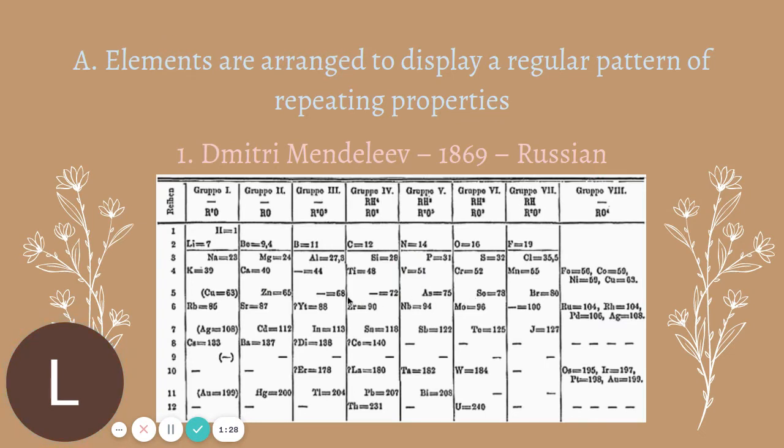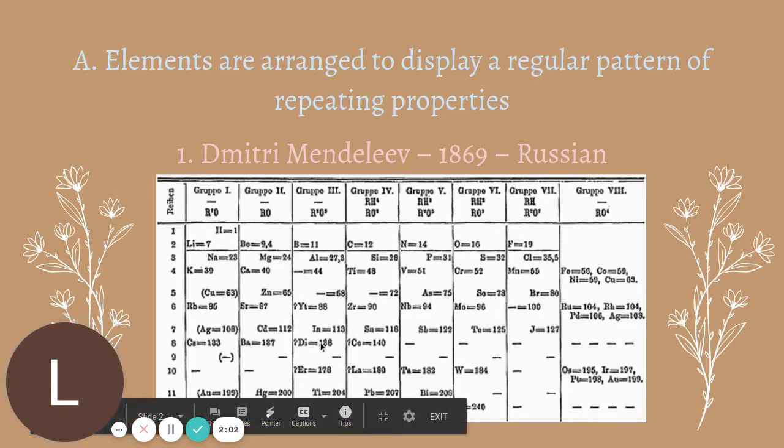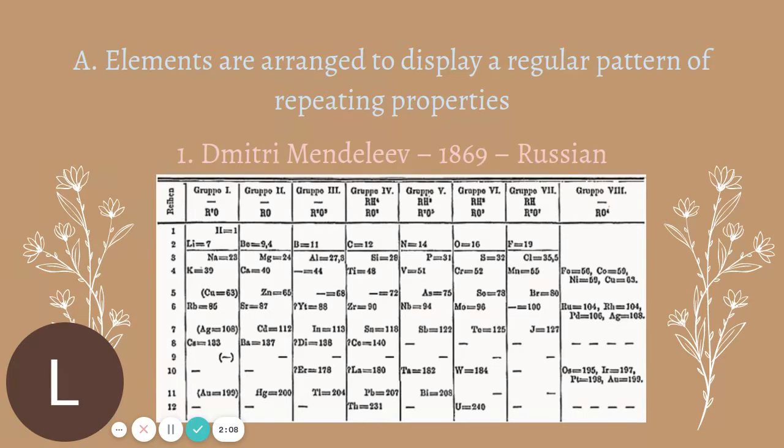And then every once in a while, he had blanks. That's what these dashes are. Later we discovered elements that went into those blanks. So he was able to predict missing elements. That's what you guys did in the activity last week, where you were arranging all the shapes by their numbers and their colors. And you left blanks because you could tell what was going to go there based on patterns. Well, that's what he did. He knew that an element needed to go there because all the columns that he created had similar chemical and physical properties.